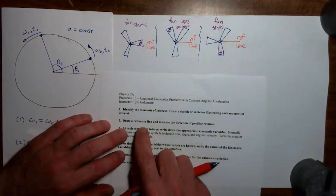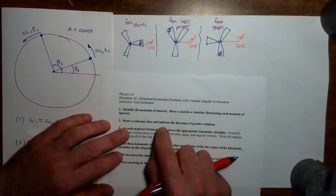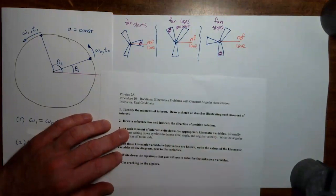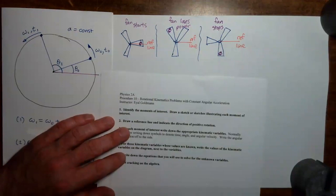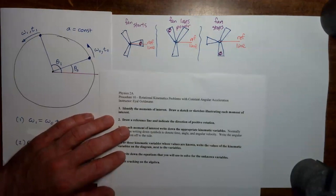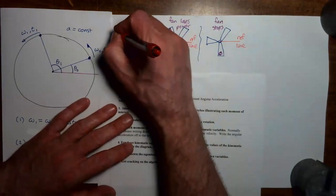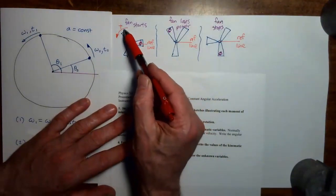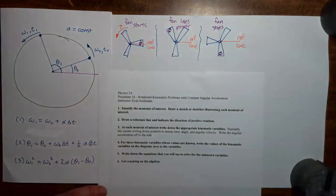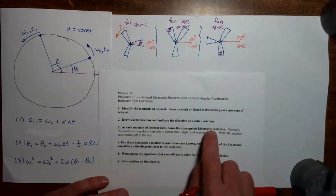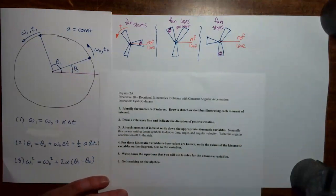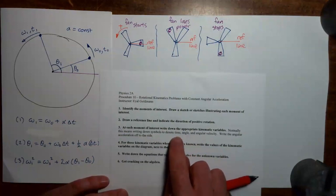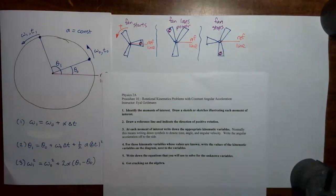Step two says to draw a reference line — which I've already done — and indicate the direction of positive rotation. Anytime we do a problem involving rotational kinematics, we have to decide if we're going to take the positive direction of rotation to be clockwise or counterclockwise. Unless there's a reason for doing otherwise, we take the positive direction to be counterclockwise, indicated by an arrow hooking in the counterclockwise direction with a little plus sign.